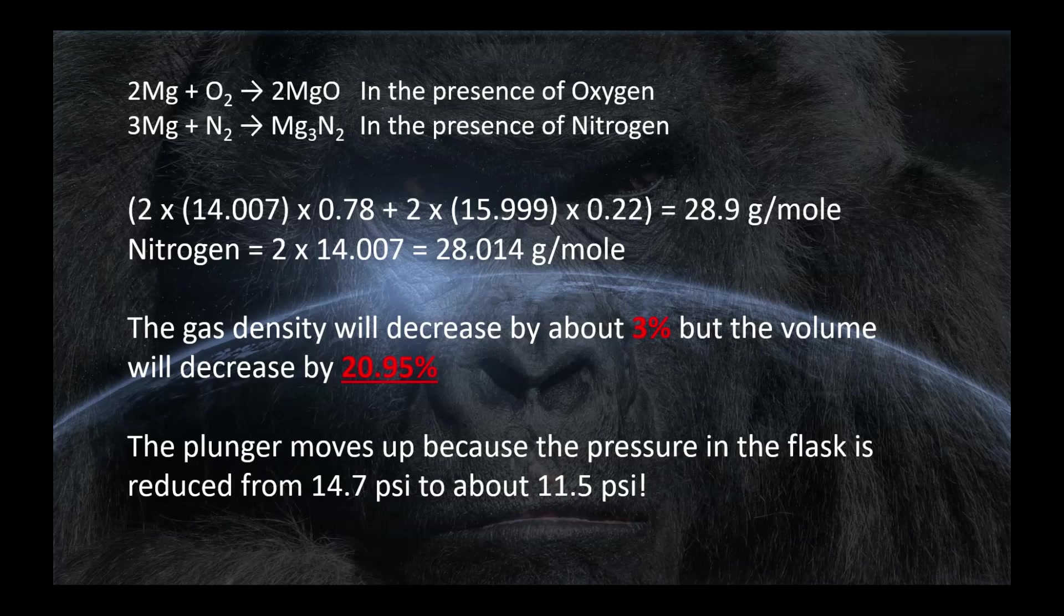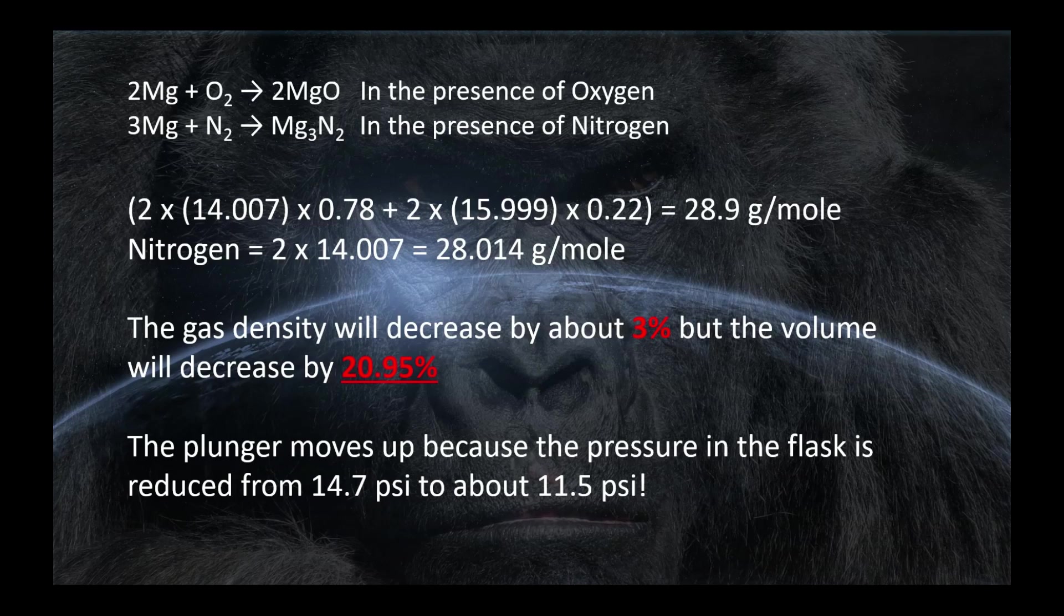When he burns magnesium in air, the preferential reaction is with oxygen, and you form magnesium oxide. You can also form magnesium nitride, but we'll assume he got the stoichiometry just exactly right. So air is 78% nitrogen, it's actually 21% oxygen, and 1% other stuff like argon, CO2, hydrogen, helium, etc. So for the purpose of a simple calculation, I'm just going to add that 1% to the oxygen fraction, and we can calculate the density in terms of grams per mole for air to be 28.9. Nitrogen alone would be 28.014, that's about 3% less.